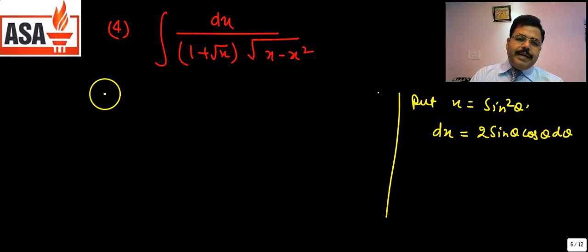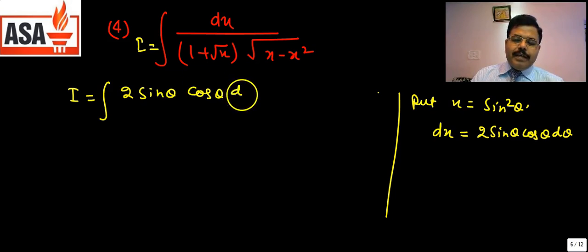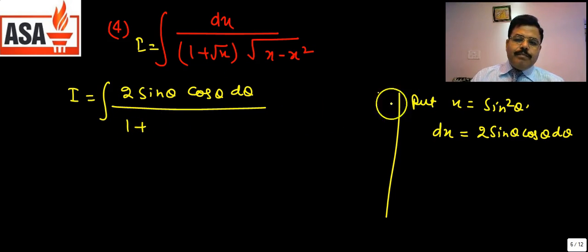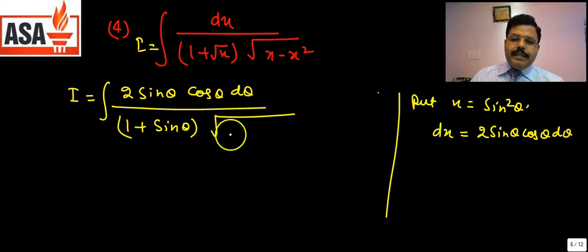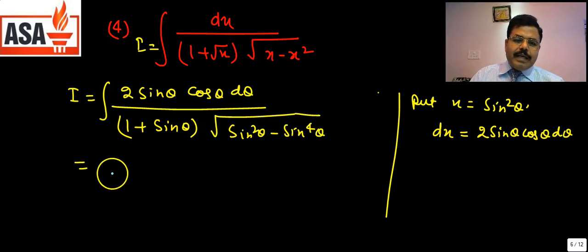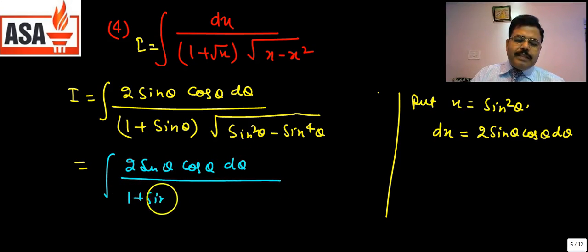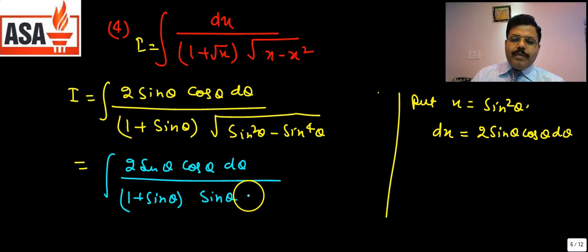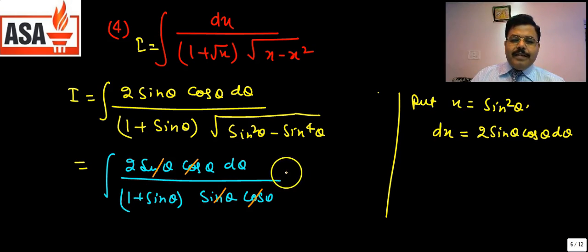Substituting, the integrand becomes 2sinθ cosθ dθ / ((1 + sinθ) · sinθ cosθ). The sinθ cosθ terms cancel, leaving 2dθ/(1 + sinθ). Multiply numerator and denominator by (1 − sinθ): this gives 2(1−sinθ)/cos²θ dθ = 2(sec²θ − secθ tanθ) dθ.